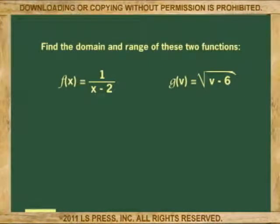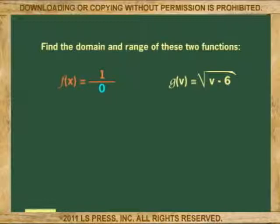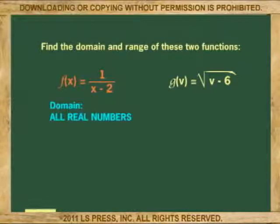Let's say now we want to determine the domain and range of a function. Take a look at this particular example. Division by zero is not possible because division by zero gives an undefined answer. So, looking at all the possible values for x to find the domain, we realize that the only number that x cannot be is 2, because 2 will make the denominator 0 and division by zero is undefined. So, the domain of this function is all real numbers except 2.